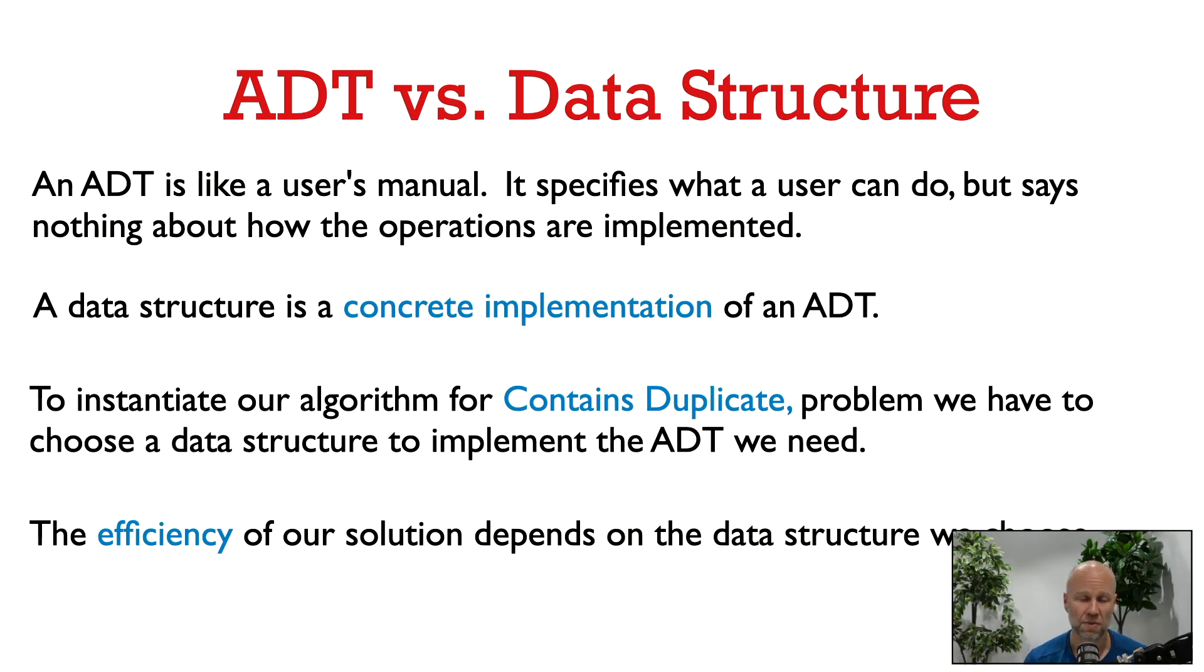It's important to keep in mind the difference between an abstract data type and a data structure. An abstract data type is like a user's manual or an API. It is written from a user's perspective. It tells you what operations you can do, but it says nothing about how those operations are implemented. That's what's nice about an ADT. It lets us abstract away from implementation details.